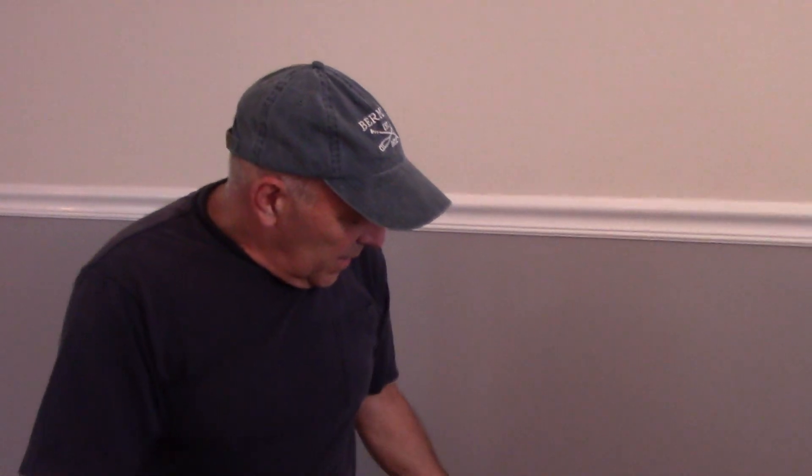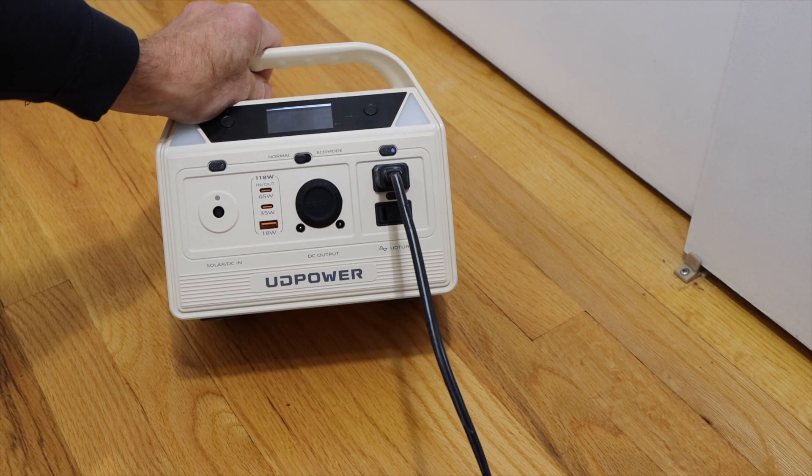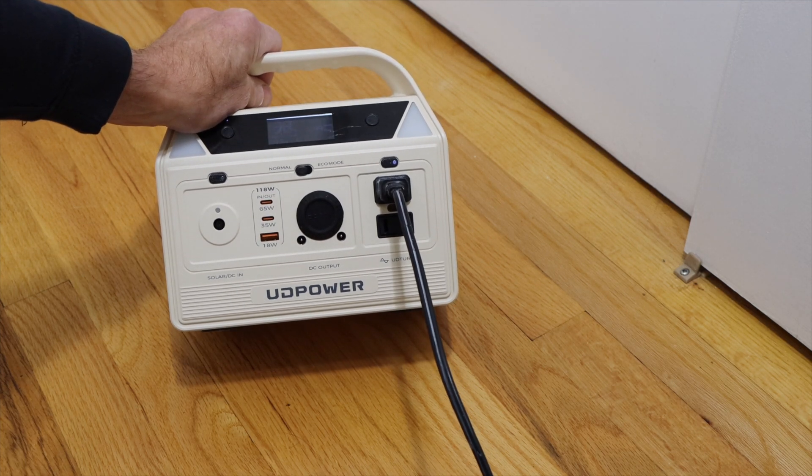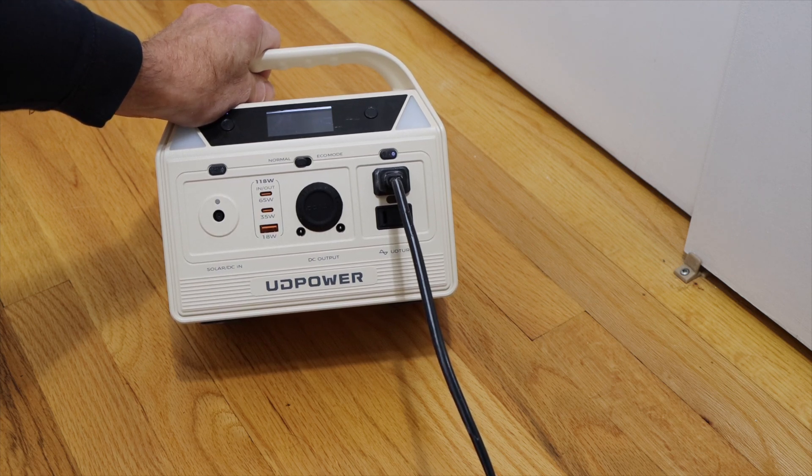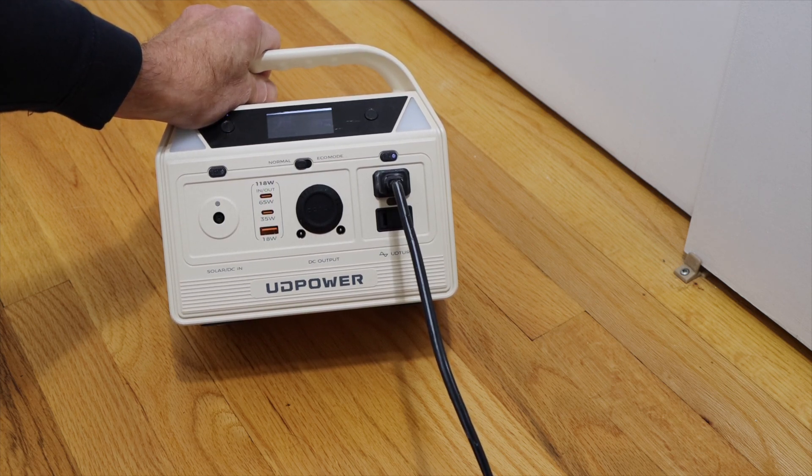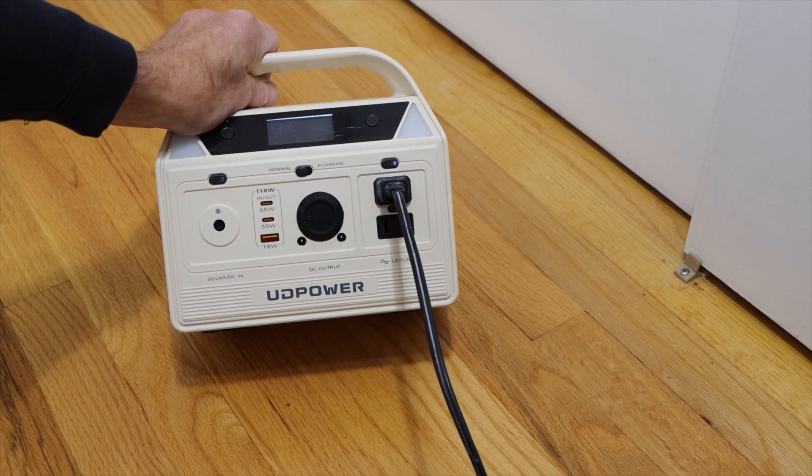So we're going to just replace this with a new one. The first thing I want to say is make sure you turn your power supply off. When we turn the power supply off in the house, we need to have lights so we can see what we're doing. And the way that we can see what we're doing is we have this unit here. This one is produced by a company called UDPower. And this unit here is called a C500, which is one of their smaller units, but it actually works really well for the projects that I'm doing here.